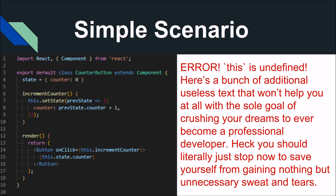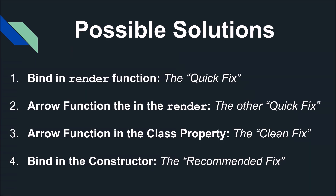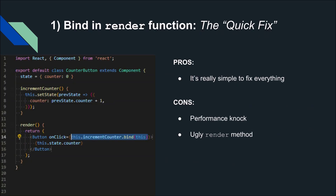There are four possible solutions to this. The first one is binding in the render function — a quick fix. The second is an arrow function in the render, another quick fix. Third, you can put an arrow function in your class property, which is a nice clean fix. And then there's binding 'this' in the constructor, which is the recommended best practice fix. I'll save the best for last.